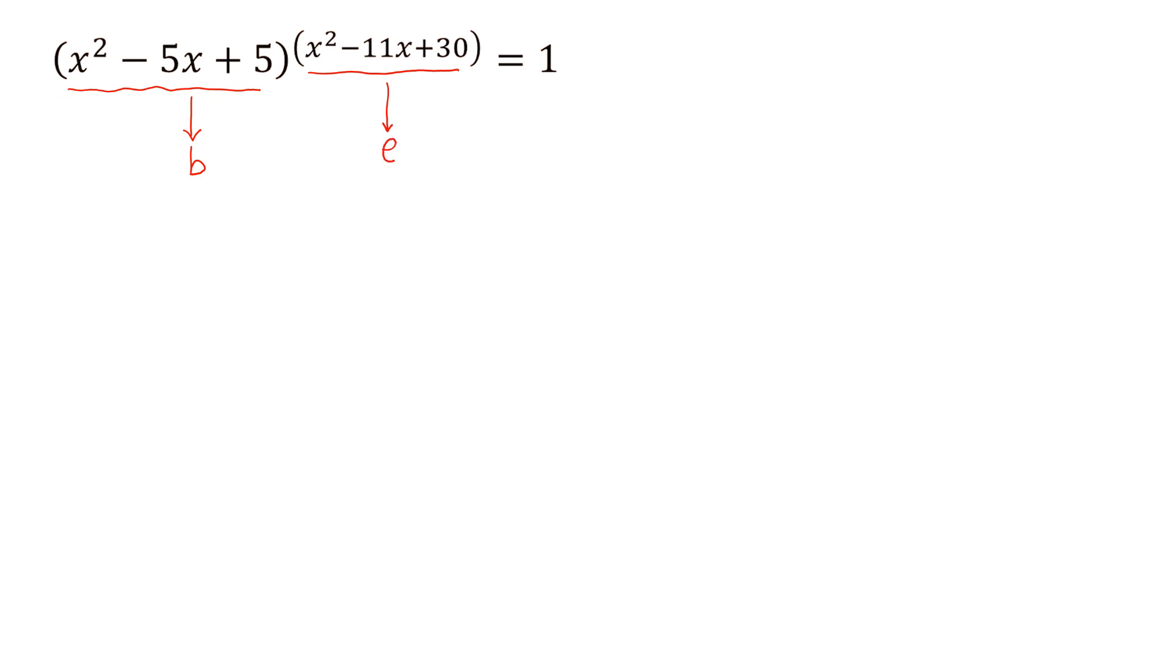Now there are three cases to solve this question. The first case, case 1, is if the exponent is 0 and the base is not equal to 0. Then we can write the exponent is 0, so x² - 11x + 30 is 0.